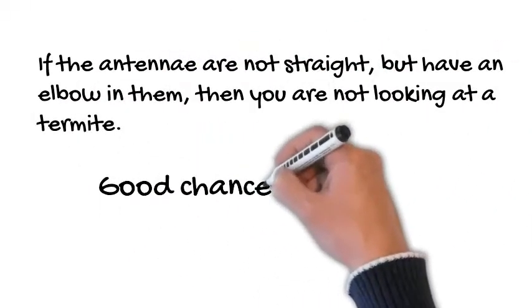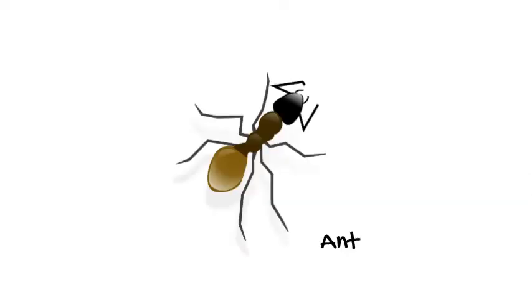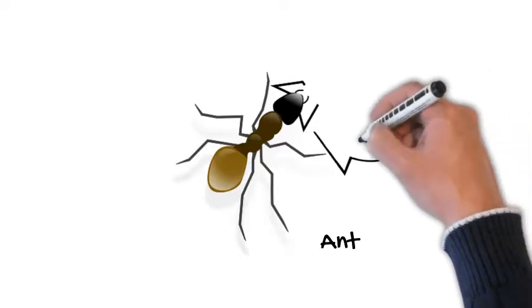If the antenna are not straight, but have an elbow in them, then you're not looking at a termite. Actually, it's most likely an ant. Ants have elbowed antennas.